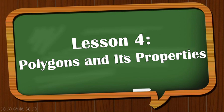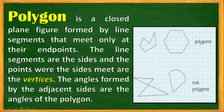So let's proceed to lesson number 4: Polygons and its Properties. When we say a polygon, it is a closed plane figure formed by line segments that meet only at their endpoints. The line segments are the sides, the endpoints where the segments meet are vertices, and the angles formed by the adjacent sides are the angles of the polygon.